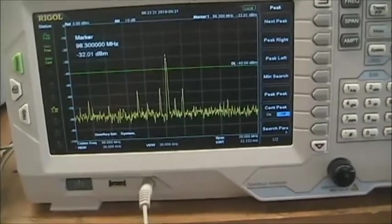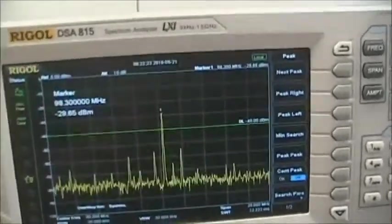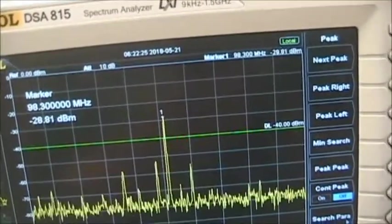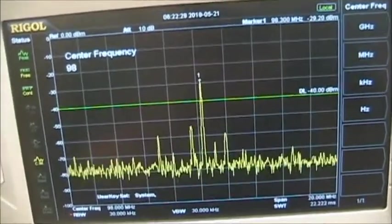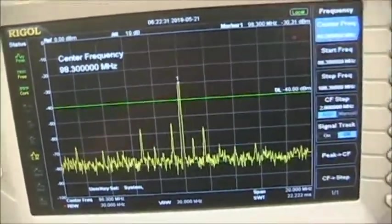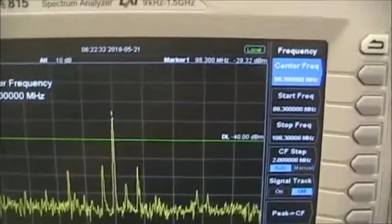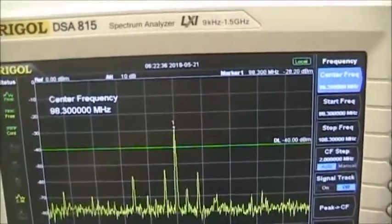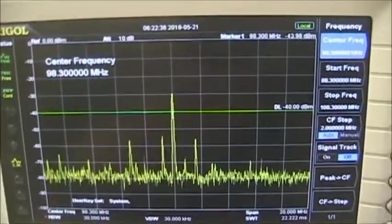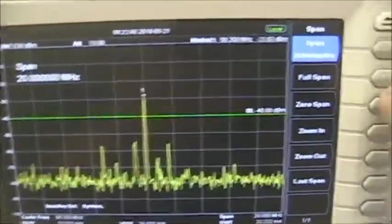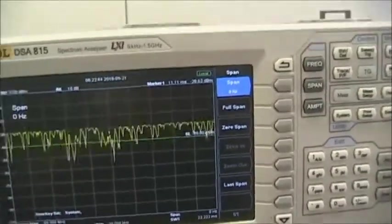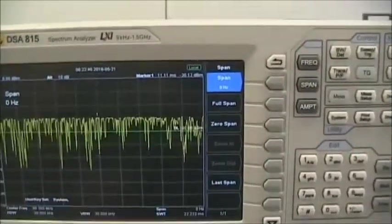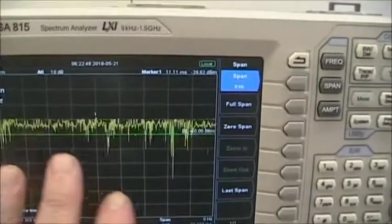So now we need to set the frequency to that peak signal, so that's 98.3 megahertz, and now it is directly in the center. Now, we need next to set the span to be zero, zero span. We have never done that before, but essentially that's a demodulating span and that's the actual signal being demodulated.